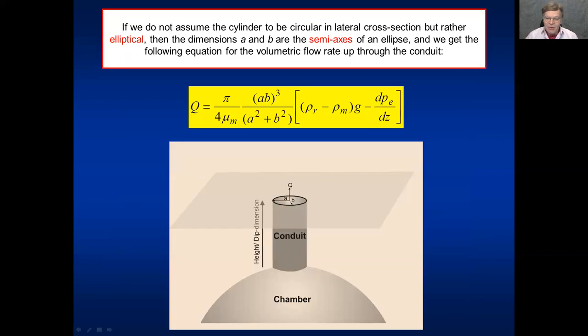Now, I said we assumed initially that for the conduit, a, the semi-axis, the larger semi-axis, and b, the smaller semi-axis of the ellipse, are equal, so it's a circle. But if they're not equal, if it's really an ellipse in a horizontal cross-section, then the equation becomes slightly more complex. And in fact, this equation can be used, strictly speaking for dikes as well, but normally we don't use it. We use another one called the parallel plate equation. So I'll come to that in a moment.